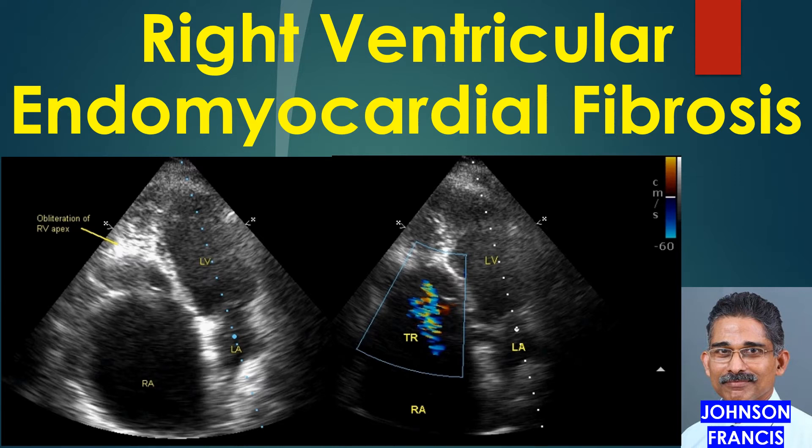Color Doppler echocardiogram in right ventricular endomyocardial fibrosis. Endomyocardial fibrosis is a type of restrictive cardiomyopathy seen mostly in the tropics and subtropics. There is progressive fibrosis and obliteration of the right ventricle, predominantly in the inflow tract and the apex. The right ventricular outflow tract is relatively spared and is often dilated.